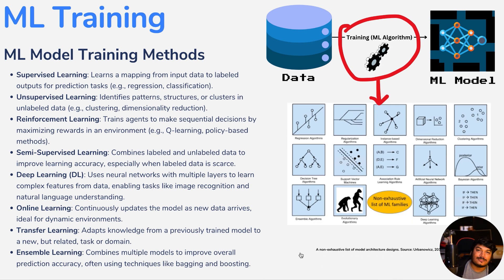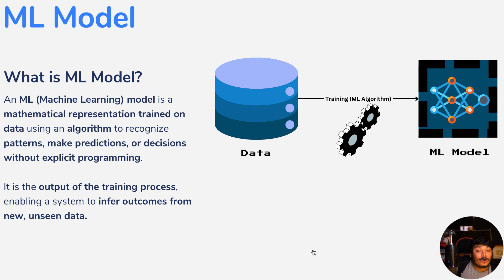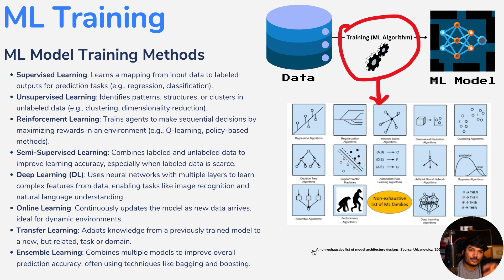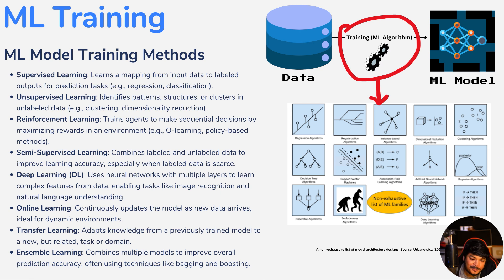So what is ML training? Machines get trained based on past data to generate some mathematical representation of a format or pattern — that is what we call the ML model, which is the final output after doing ML training. The different kinds of ML training include supervised learning, unsupervised learning, reinforced learning, semi-supervised learning, deep learning, online learning, transfer learning, and ensemble learning. We'll cover all these in a future video. Just understand that ML models are generated after doing ML training, and AI uses these ML models to do predictions or any kind of task.